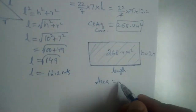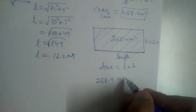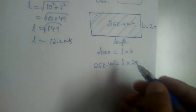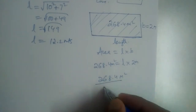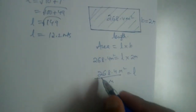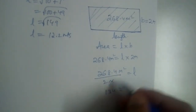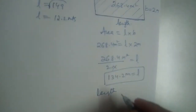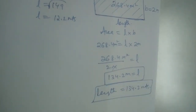The canvas is rectangular, so area = length × breadth. Area is 268.4 m², breadth is 2 meters. To find length, divide both sides by 2: length = 268.4 ÷ 2 = 134.2 meters. So the length of canvas required is 134.2 meters.